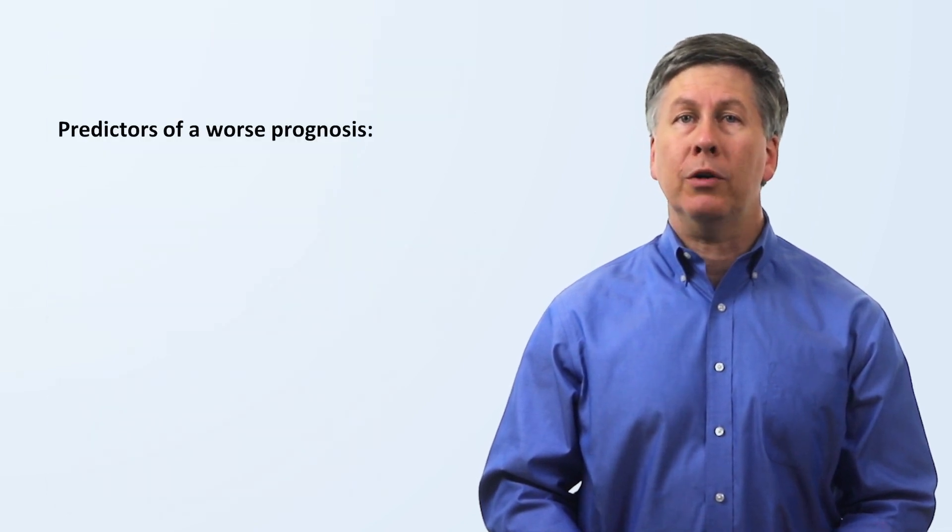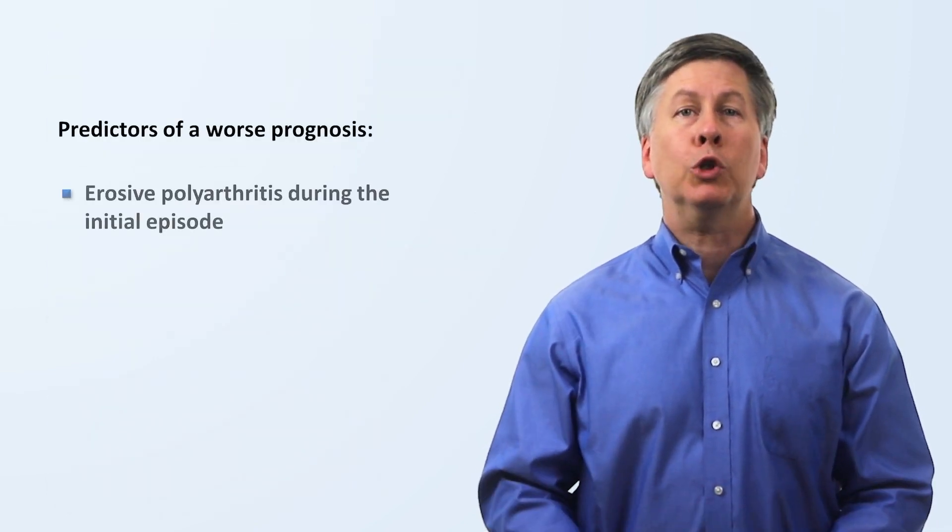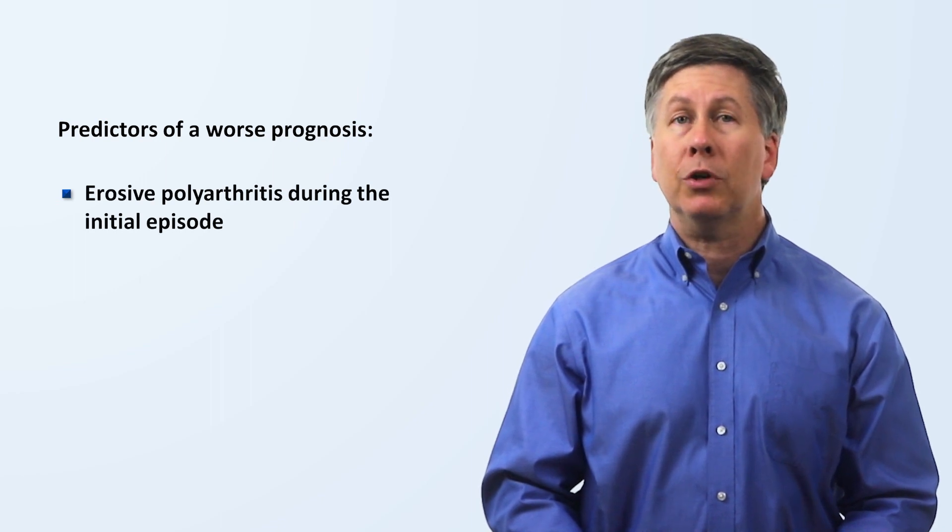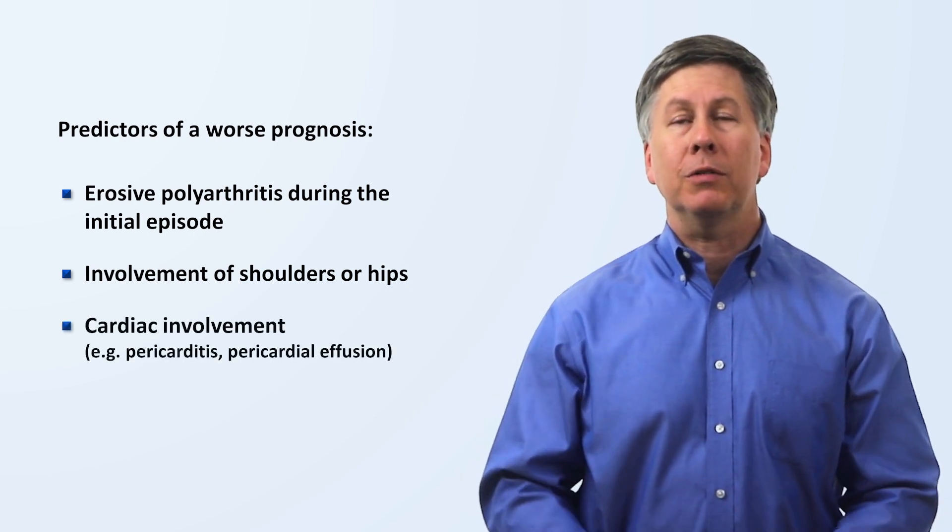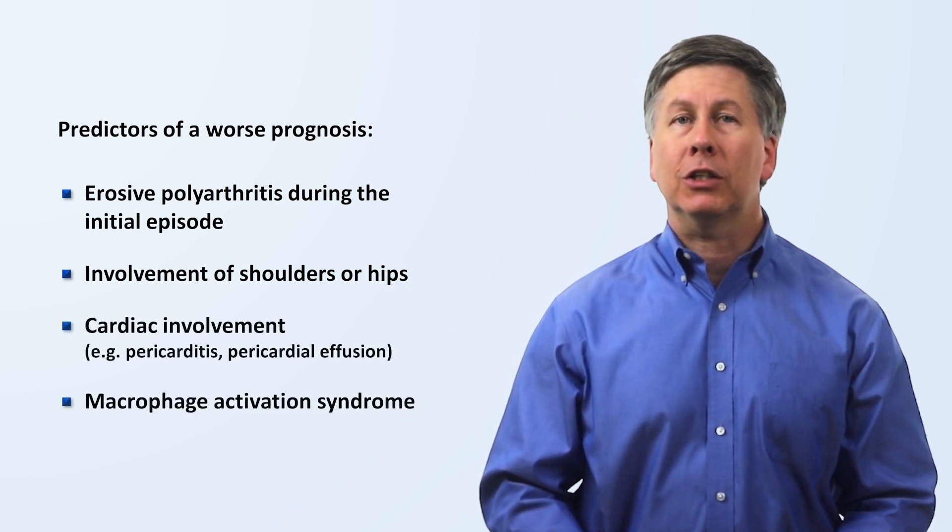Some predictors of a worse prognosis include erosive polyarthritis during the initial episode, involvement of the shoulder or hips, any cardiac involvement, and macrophage activation syndrome.